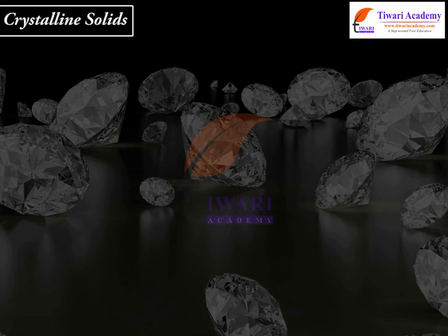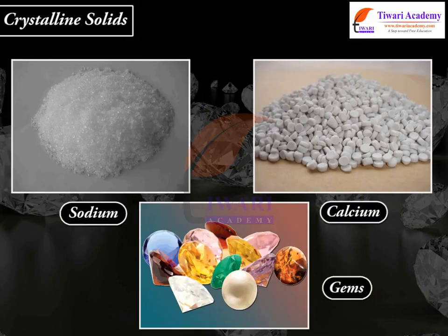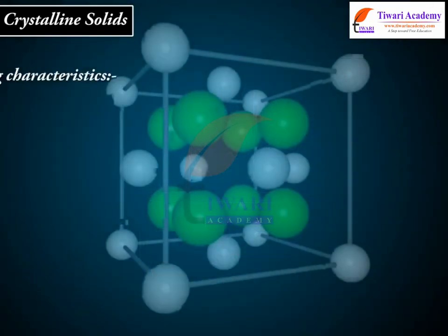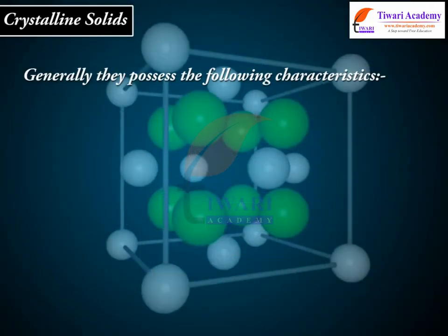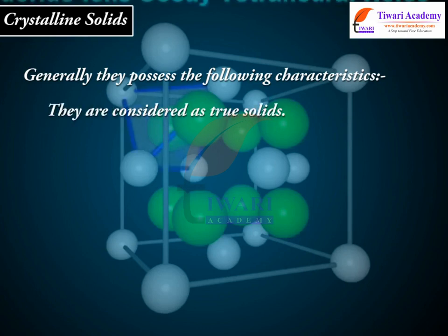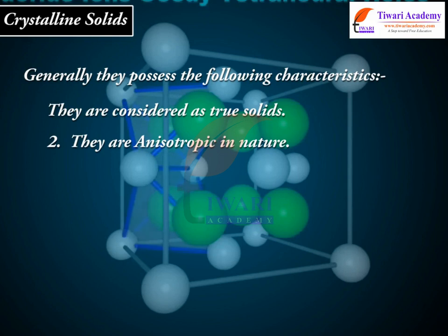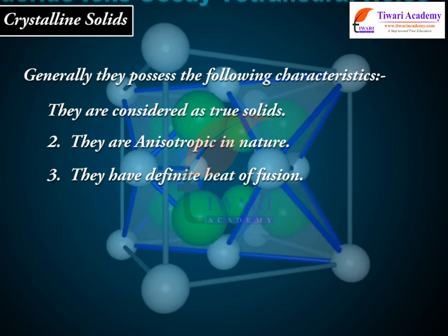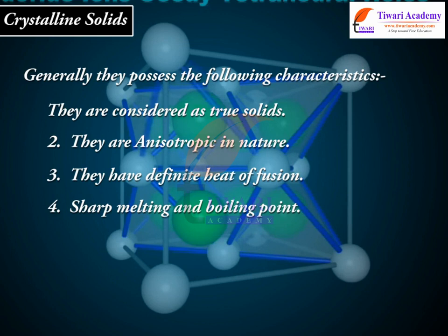For example, sodium, calcium, gems, etc. Generally, they possess the following characteristics: 1. They are considered as true solids. 2. They are anisotropic in nature. 3. They have definite heat of fusion. 4. Sharp melting and boiling point. 5. Fixed external geometrical shape and size. For example, diamonds, metal, etc.